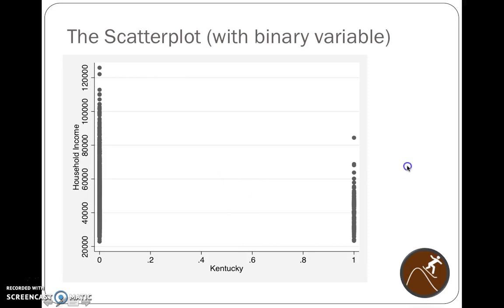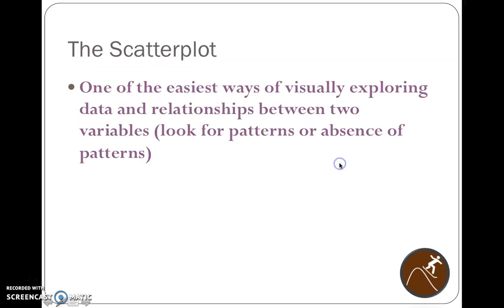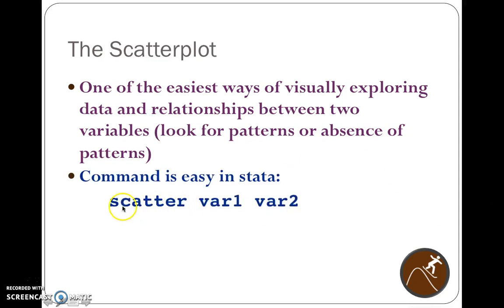The scatterplot using it better. Usually we want to have continuous data as an X and a Y variable. This is one of the visually easiest ways of exploring your data set looking for relationships between two variables. You can look for patterns or look for the absence of patterns. The command is super easy in Stata. It's just scatter, and then you put your first variable and then your second variable. Usually this is your Y and then this is your X variable. Y axis, X axis.